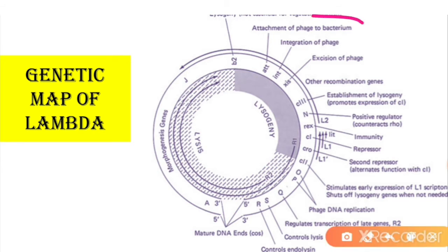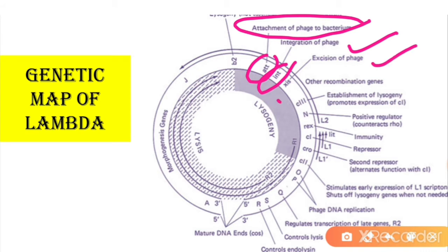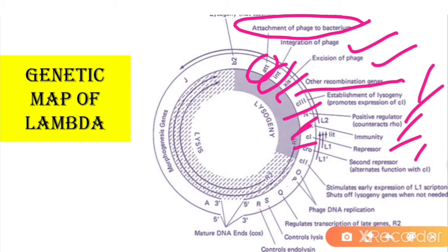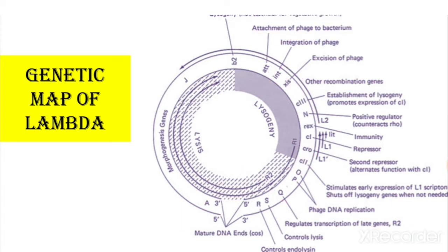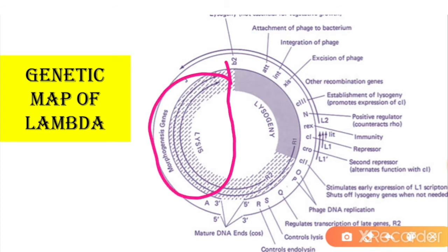Attachment of phage to bacterium is controlled by the att genes. Integration is controlled by the int genes, and action is controlled by xis genes. There are many other recombination genes. The gene cIII establishes lysogeny, N is a positive regulator, rex controls immunity, cI is the repressor protein, cro is the second repressor protein, cII stimulates early expression, O and P are phage DNA replication genes, Q regulates transcription of late genes, S controls lysis, R controls central lysine, the cos region is for mature DNA ends, and the morphogenesis genes control lysis of bacterial cells.